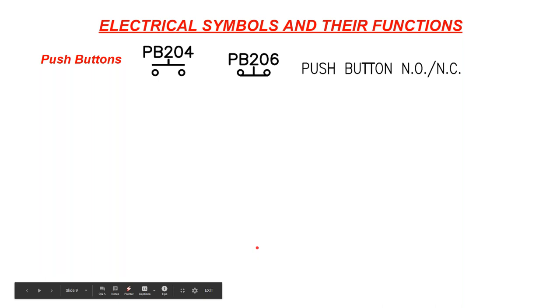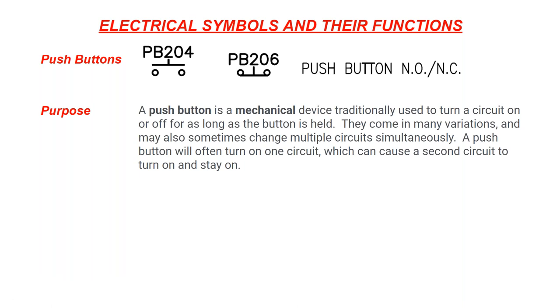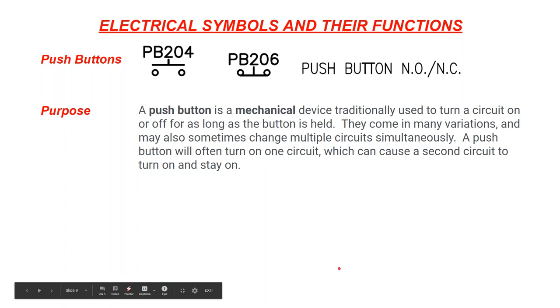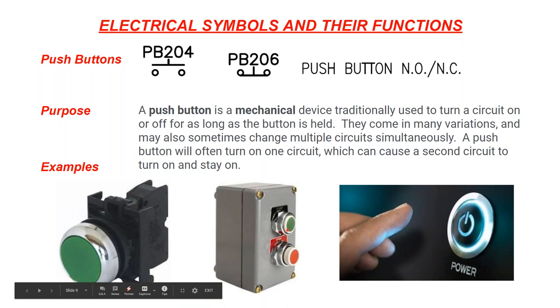I'll go over a couple of symbols now that we'll use later in the presentation. A push button is a mechanical device used to turn on or off a circuit. Quite often you'll see it as a momentary device — it starts something and then has a spring release. You see them every day; in industrial settings you'll see them as start-stop circuits, and in newer cars you use one every day to start the engine.